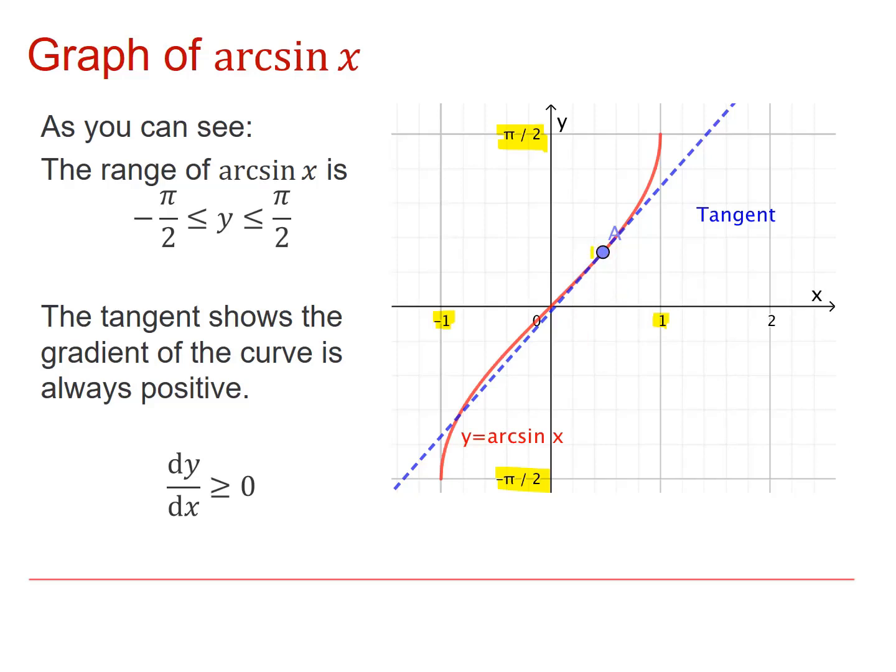The blue line is a tangent to the curve at this point here, and you can see that it has a positive gradient. Looking at the red curve, you can see that the red curve always has a positive gradient, and we can write that dy/dx is always greater than or equal to zero.